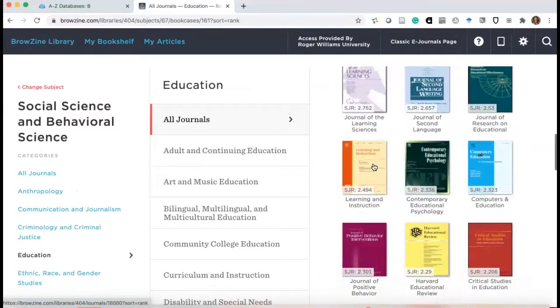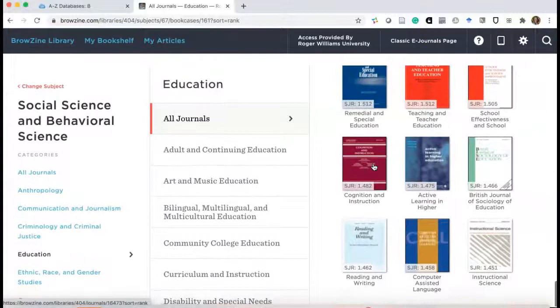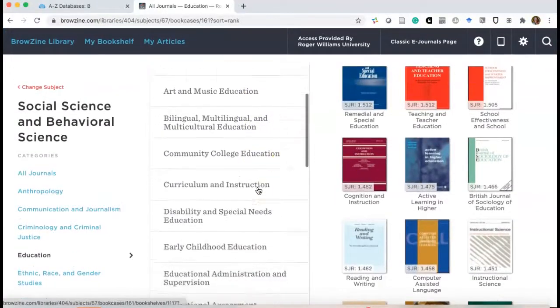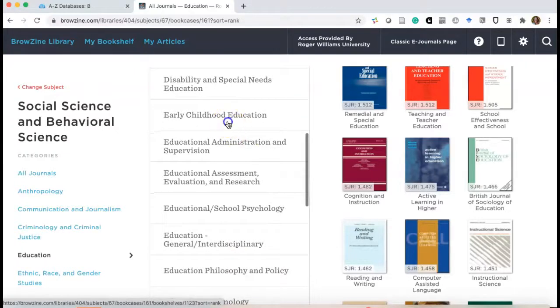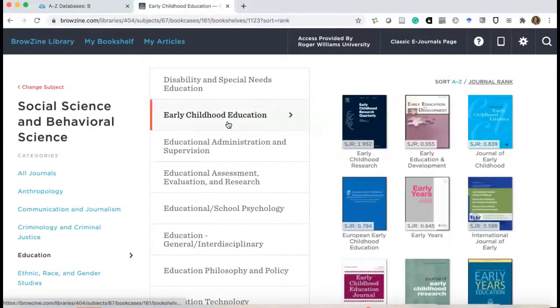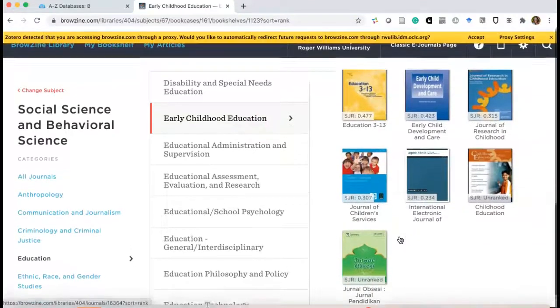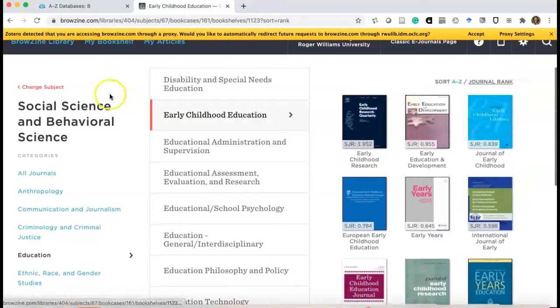You can scroll to look at the entire list, which is probably very long. Or you could look at the sublistings, the subdisciplines. So maybe I was interested in early childhood education. If I click that, it would limit the journals to only those journals focusing on early childhood education.